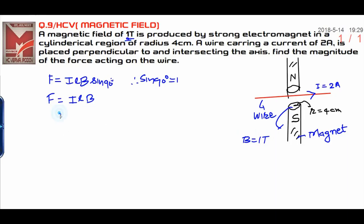Now, the current I is 2 amperes and B is 1 tesla. How will you calculate L? Only the portion of the wire in the magnetic field region should be included.